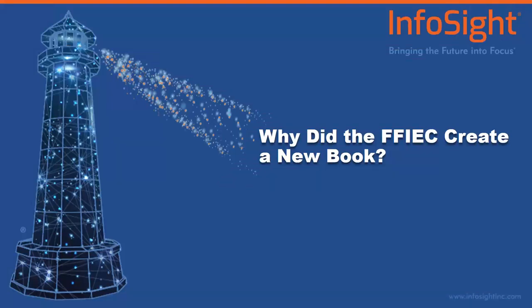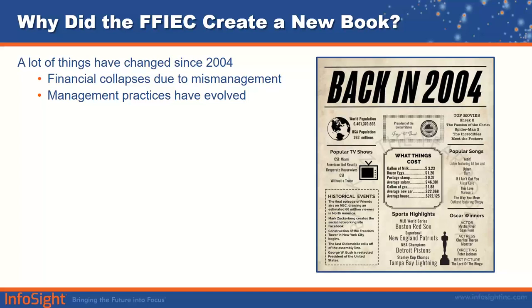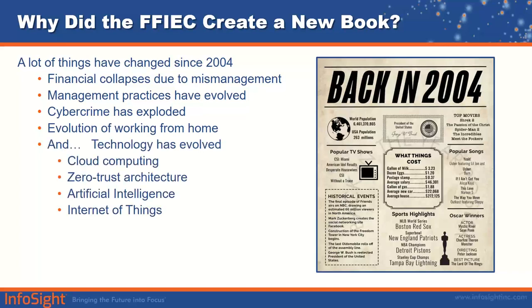So why did the FFIEC create a new booklet? In all reality, it's because so many things have changed since 2004. We've had financial collapses due to mismanagement and theft. Management practices have evolved. Cybercrime like business email compromise and ransomware has exploded. COVID allowed millions of people to participate in the evolution of working from home. And technology has evolved with solutions like cloud computing, zero trust architecture, AI and machine learning, and of course, the Internet of Things.